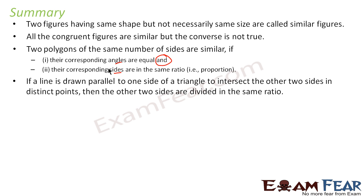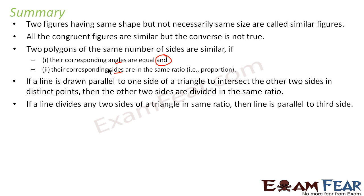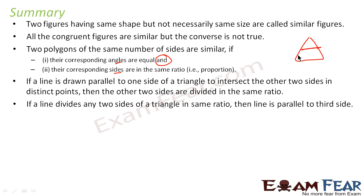If a line is drawn parallel to one side of a triangle to intersect the other two sides in distinct points, the other two sides are divided in the same ratio. Conversely, if a line divides any two sides of a triangle in the same ratio, then the line is parallel to the third side.